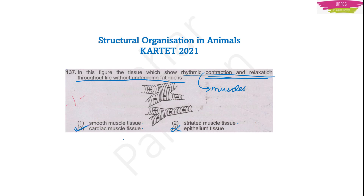Why is cardiac muscle tissue the answer? Because cardiac muscle tissue has a lot of blood capillaries — it is a highly vascularized tissue. Highly vascularized means there are many blood capillaries, and those capillaries carry blood, which is the carrier of oxygen to the cells. Oxygen is required to work continuously without getting tired, so this is one of the reasons.